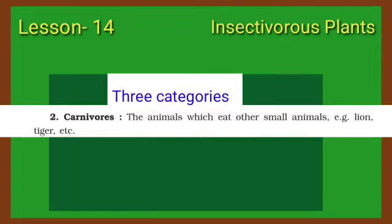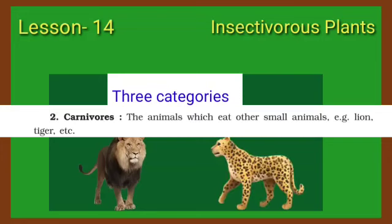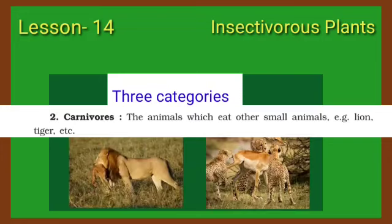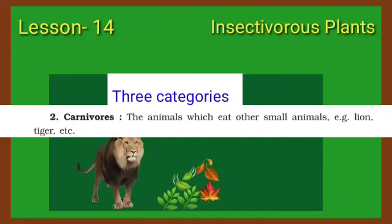2. Carnivores — the animals which eat other small animals. For example, lion, tiger, etc. Kids, you have often seen them on TV hunting other animals, because the lion does not eat grass, leaves, etc.